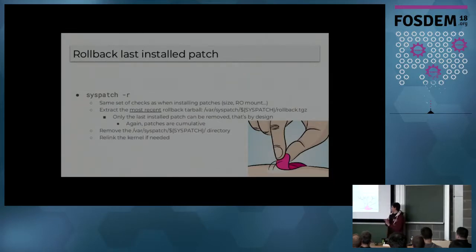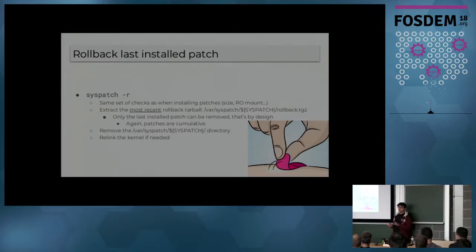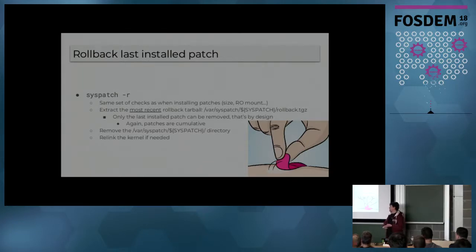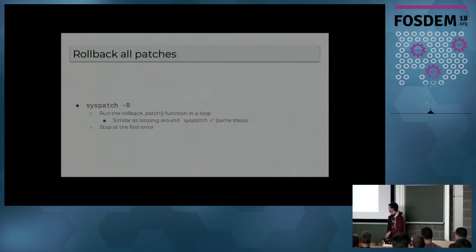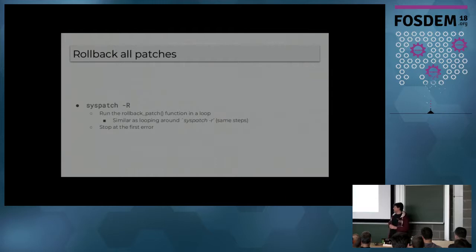We have the minus r option, which rolls back the last installed patch. It's important to note that you cannot choose which patch to roll back — all patches are cumulative. If you want to roll back a patch, you have to roll back the entire sequence of patches before it, which is why you can only roll back the last installed one. It does the same checks as when installing patches, then gets the rollback table from the var/syspatch directory and extracts it, removes the syspatch directory, and relinks the kernel if needed. We also have minus capital R, which removes all patches. As with everything in syspatch, it stops at the first error.